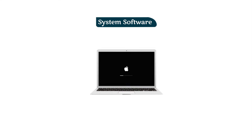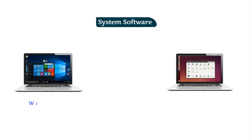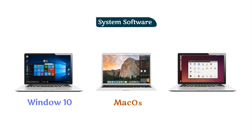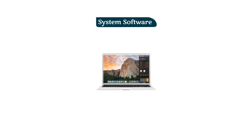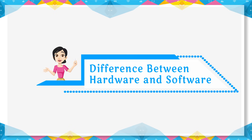An operating system is an example of system software. Microsoft Windows, Mac OS, and Linux are some famous operating systems used for computers.